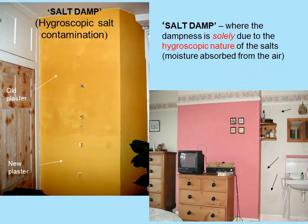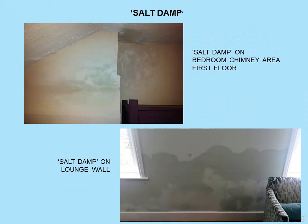Some examples of salt damp: on the left, the old plaster was left on — a job that looked pretty clean — but one day it just appeared as the humidity went up, and that appeared in a matter of a few minutes. On the right, salt damp solely due to the hygroscopic nature of salts, caused by hygroscopic salts derived from a chimney flue. Also notable: if hygroscopic salts get into a hygroscopic material such as wallpaper or cardboard, the effect of dampness seems to be exaggerated.